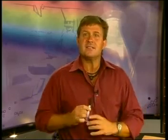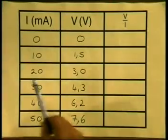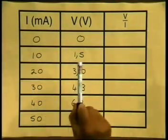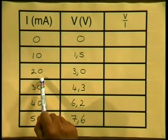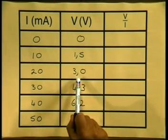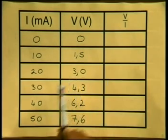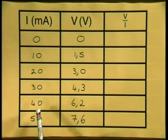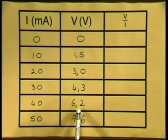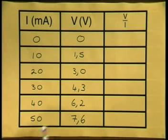Now I am going to go to my table and show you the readings that I actually collected. My first reading of 10 mA, I recorded 1.5 volts. My next reading of 20 mA, I obtained a reading of 3.0 volts. 30 mA gave me 4.3 volts. 40 mA gave me 6.2 volts. And my last reading of 50 mA gave me a reading of 7.6 volts.